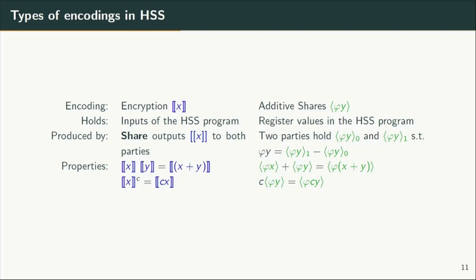Next, we present a general framework for HSS constructions that encompasses all HSS constructions from the literature, including ours. HSS is based on the interplay between two homomorphic schemes: an additively homomorphic encryption scheme and an additive secret sharing scheme. Encryption is represented by square brackets and holds the inputs to the HSS program. Hence the share function on input x outputs the encryption of x to both evaluating parties. Since the encryption scheme is homomorphic, given ciphertexts of x and y we can generate ciphertexts corresponding to x plus y and to c times x, where c is any constant. Although phi times y is the difference of the shares of the two parties, it is conventional to call them additive shares because they are added to be decoded.